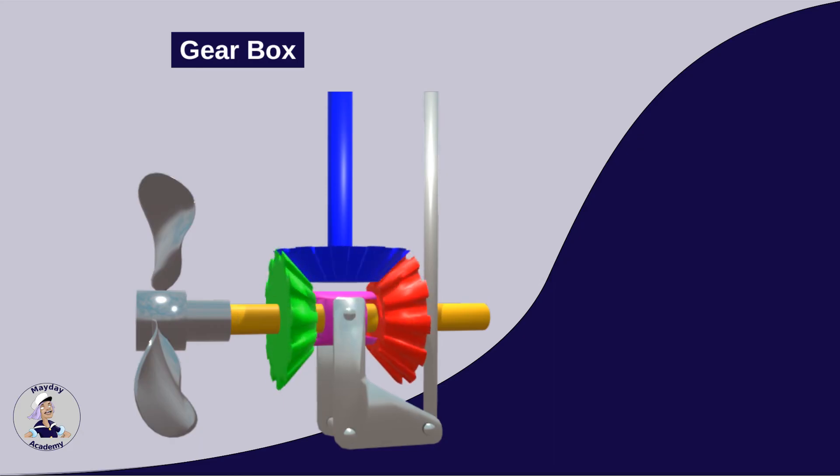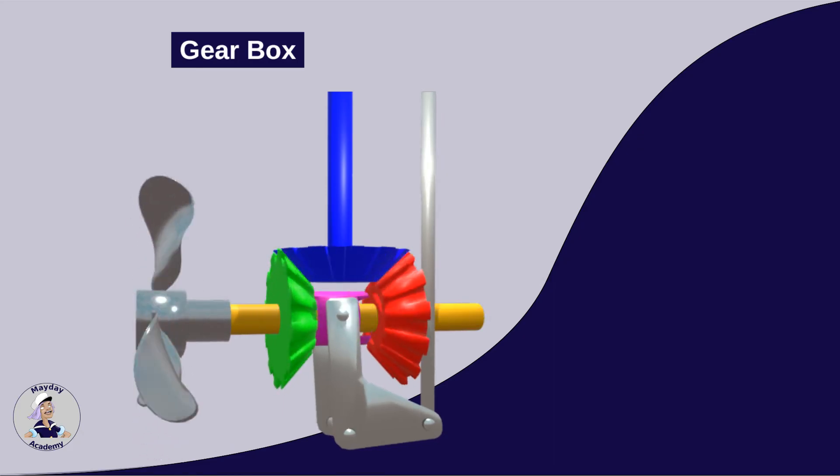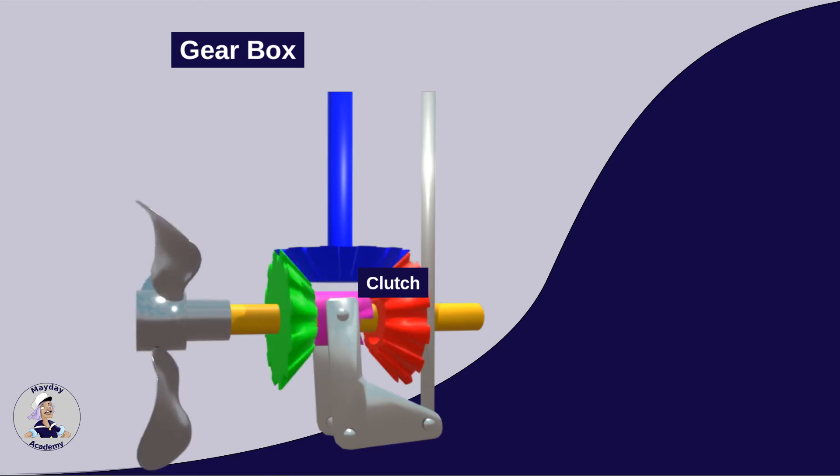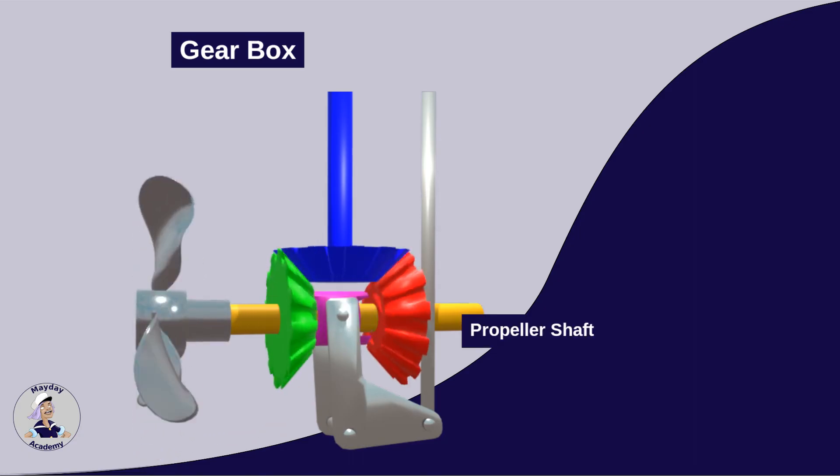If we move the gear lever to the forward position, the dogs of the clutch, magenta, engage in the grooves of the gear for forward travel, green. The clutch now rotates with the green gear. It is connected to the propeller shaft, which is now also set in a forward rotational motion.